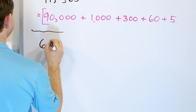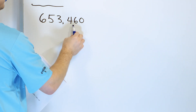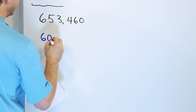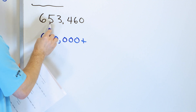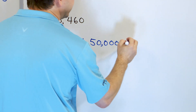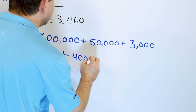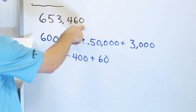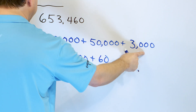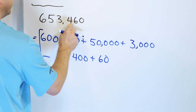Problem number six. Let's take a larger number: 653,460. Here's the ones, tens, hundreds, thousands, ten-thousands, hundred-thousands — but we have six of them, so the value is really 600,000. The 5 is in the ten-thousands place, so it's really worth 50,000. The 3 is in the thousands place, so it's really worth 3,000. The 4 is worth 400. The 6 is worth 60. And then we have a zero in the ones place, so we could put a plus zero, but it won't really matter. So finally, what we have is 600,000 plus 50,000 plus 3,000 plus 400 plus 60. That's what we mean — when we put it all together, we get 653,460.